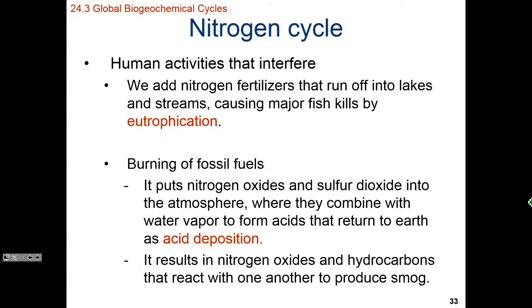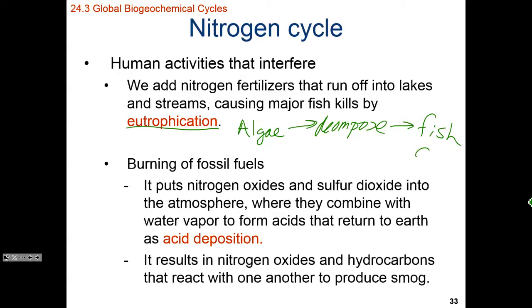If we artificially increase the amount of nitrogen in a body of water, that's a process known as eutrophication. When eutrophication occurs, there will be a dramatic increase in nitrogen, which causes an algae bloom. The algae bloom itself isn't necessarily that bad — it's what happens next. After the algae bloom dies and decomposes, the decomposers suck oxygen out of the water, which causes fish to asphyxiate. This results in major fish kills.